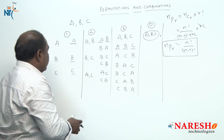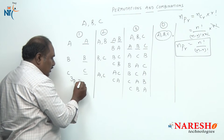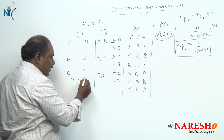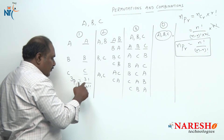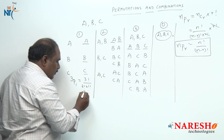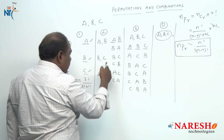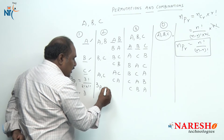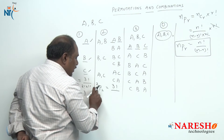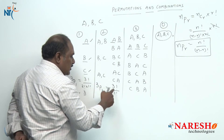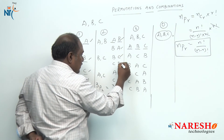Coming back to our example: selecting 1 and arranging can be done in 3P1 ways. By the formula, 3P1 equals 3 factorial divided by 2 factorial, which is 6 divided by 2, giving 3 different ways. Selecting 2 out of 3 friends and arranging gives 3P2 ways, which is 3 factorial divided by 1 factorial, giving 6 — the six arrangements being AB, BA, BC, CB, AC, CA.